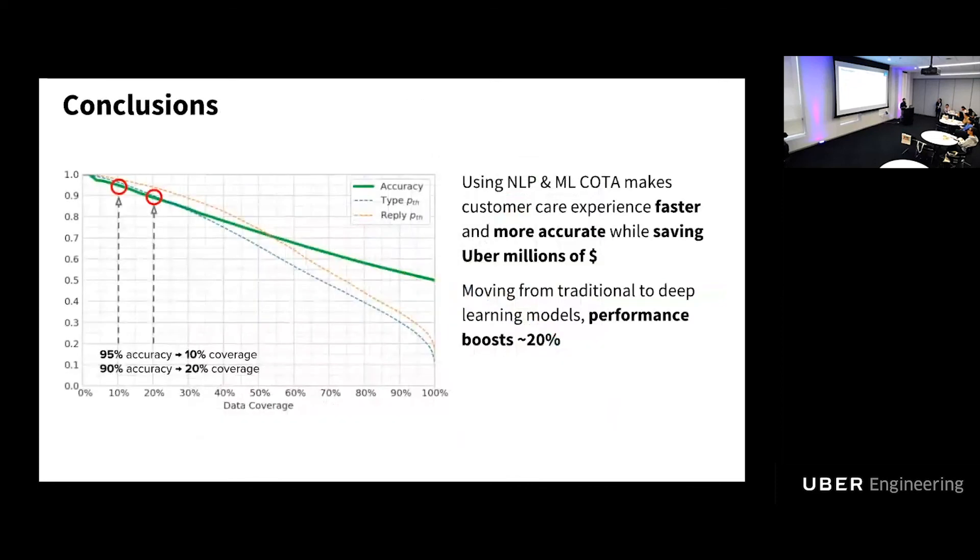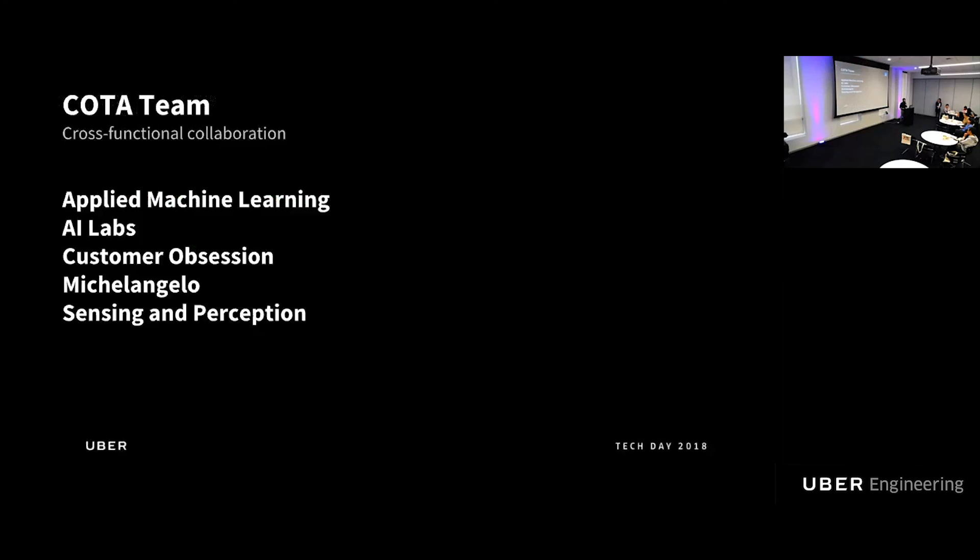This high accuracy is actually one of the conclusions that we got, that this high accuracy is what makes our model make for faster and more accurate customer support because we're helping our CSR agents with that, and also helps saving millions of dollars for the company. And also the other finding is that those deep learning models are actually 20% more accurate than previous models. These are the teams that have been involved in this project. I want to thank them all because this has been a really big and wide collaboration across the company.